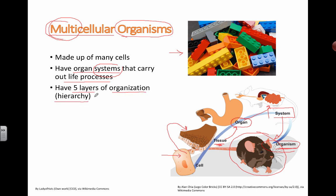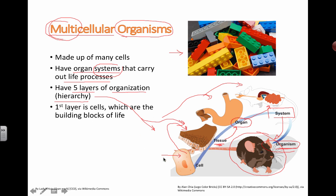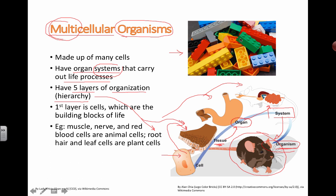Hierarchy is just a fancy word for ranking things in order. We have different levels, and we'll see many diagrams showing this. The first layer is cells — the smallest unit of life, the building blocks of life. We have different types of cells like muscle cells, nerve cells, and red blood cells. In plants, we have root hair cells and leaf cells — we learned about these in our cells unit.